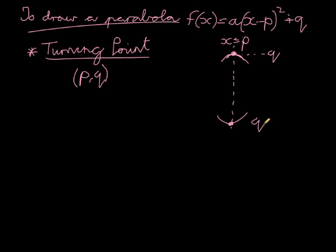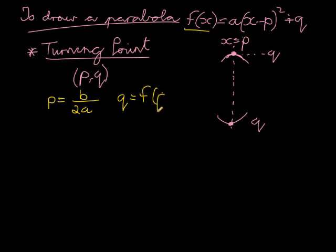What if we have the ax squared plus bx plus c format? In that case, our formula for the turning point — the p value, the equation of the symmetry line — we get by using the formula negative b divided by 2a. And we get q by taking that answer for p and substituting it into f(x) to get the value of q. That's how we find the turning point.